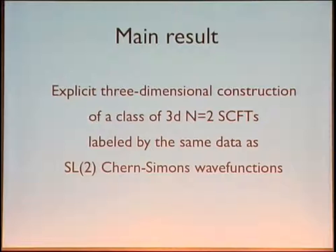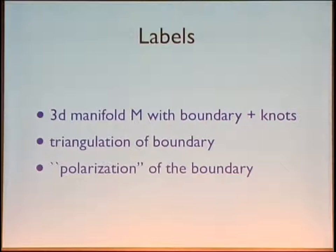So this is the main result. Let me be a bit more explicit about what data these theories depend on. We can associate a theory to generic three-manifolds, which will generically have knotted defects inside, and possibly boundaries.